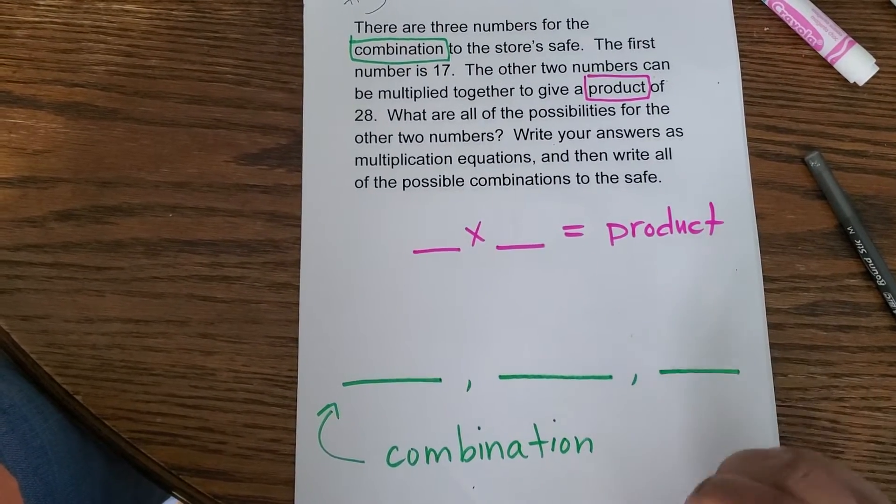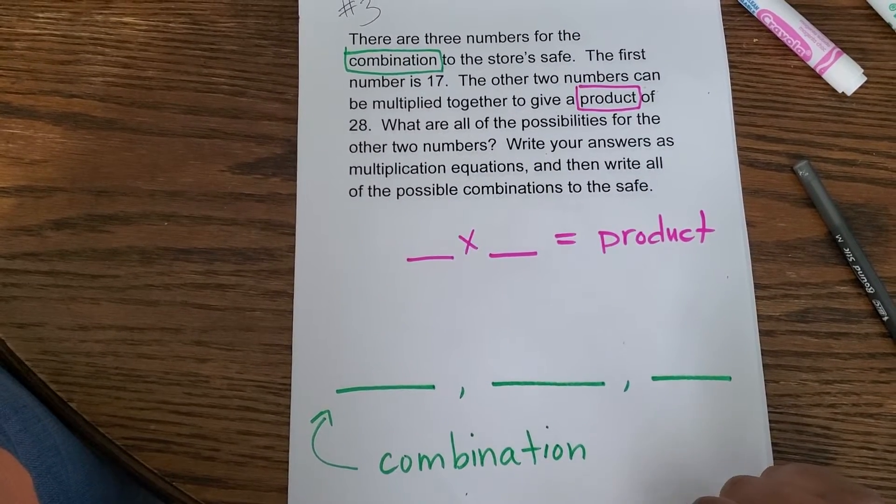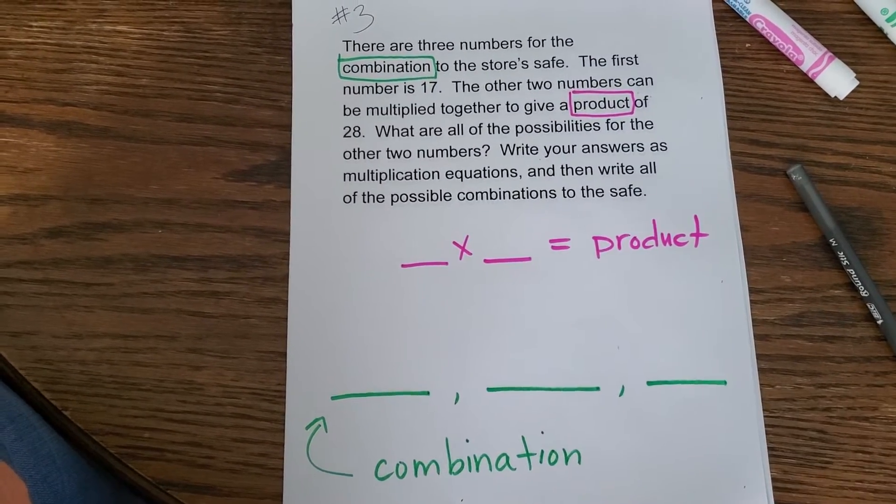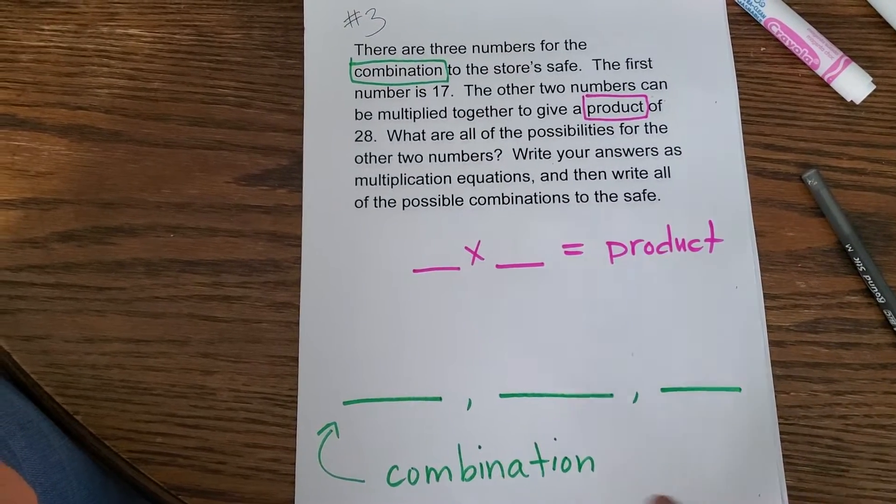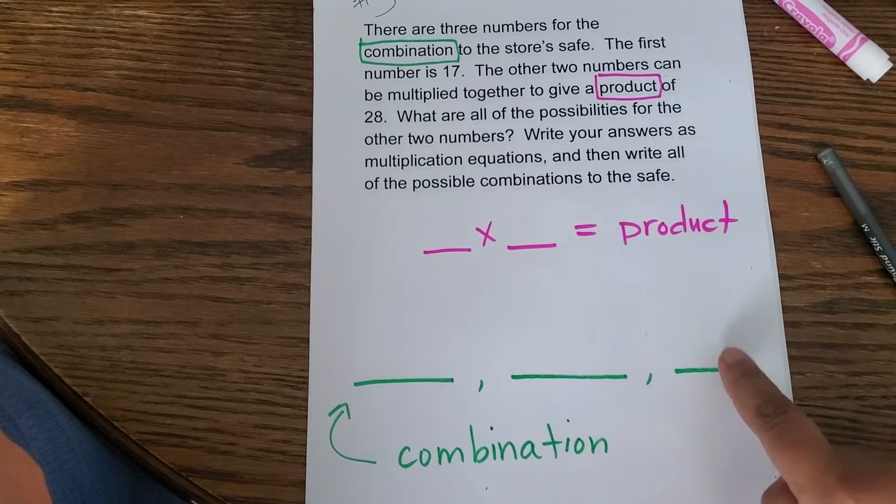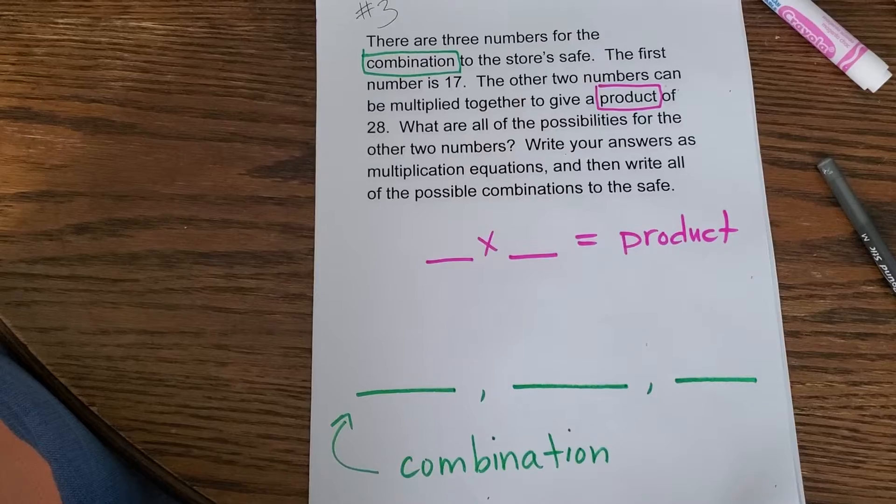Secondly, the question talks about a combination. I don't know if you guys know what that means, but there are some locks that have number dials on them and you need a three digit combination. So there are one, two, three separate numbers that you need for a combination.